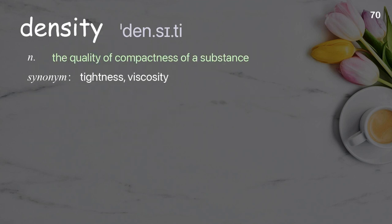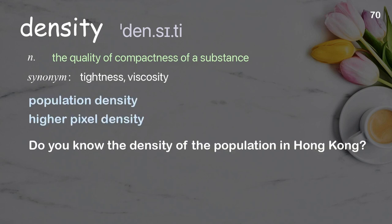Density: the quality of compactness of a substance. Examples: Population density. Higher pixel density. Do you know the density of the population in Hong Kong?